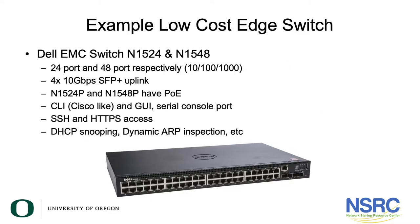Another low-cost edge switch option is the Dell EMC N1524 and N1548 — 24-port and 48-port respectively — supporting 10/100/1000 speeds. They have four 10 gig SFP+ uplinks, and models with the P suffix in the name support power over Ethernet as well. The CLI is very Cisco-like, it has a GUI, and it has a serial console port for last resort access. Unlike the Netgear, they support secure shell and HTTPS access, as well as DHCP snooping and dynamic ARP inspection as recommended.